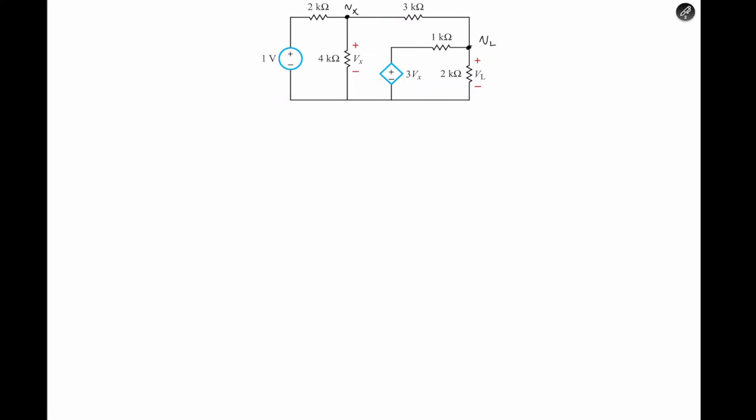So at Vx, we would apply KCL. And that would be the difference between the Vx and the voltage source. As we see a positive terminal, that would be a positive one, so Vx minus a positive one divided by two. This would be Vx with reference to ground, so that would be zero volts. So that would be Vx with reference to V, which is one volt divided by two kilo ohms, plus Vx all over four kilo ohms, plus Vx minus Vl all over three kilo ohms.